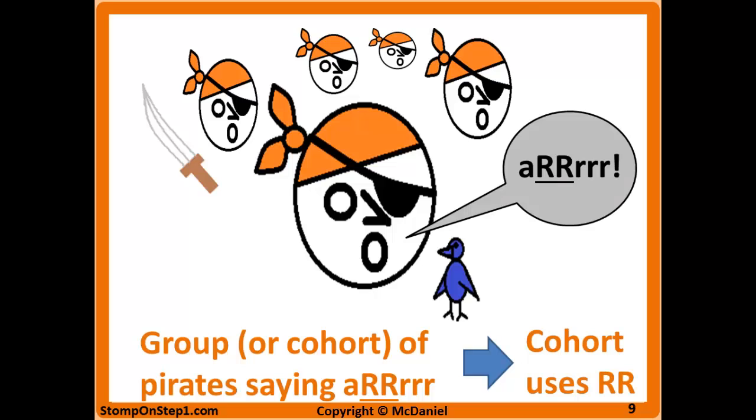I have a really stupid mnemonic to remember which one has relative risk. I think about a group of pirates, and cohort is just a fancy name for a group, and I think about this big group of pirates all saying R. So RR would stand for relative risk and the group is a cohort.